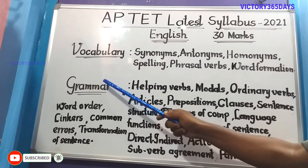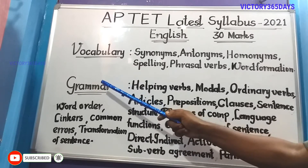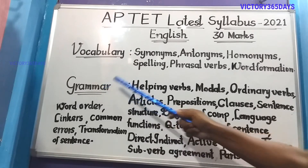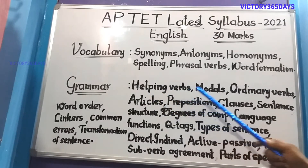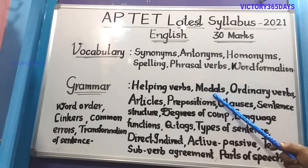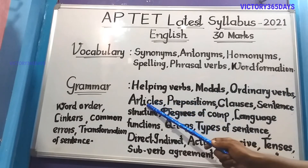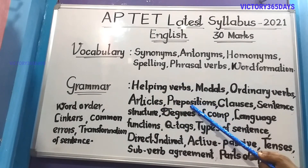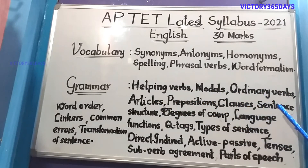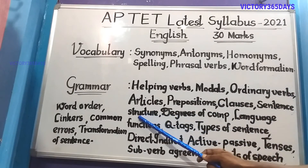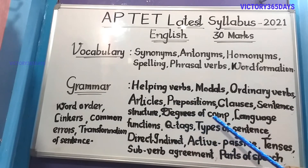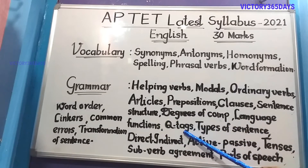Now coming to the grammar part. Grammar means transformation of sentences — you have a complete sentence and you have to change it. Topics here include helping verbs, modals (also called modal auxiliaries or ordinary verbs), articles, prepositions, clauses, sentence structure, degrees of comparison, language functions, question tags, and types of sentences.